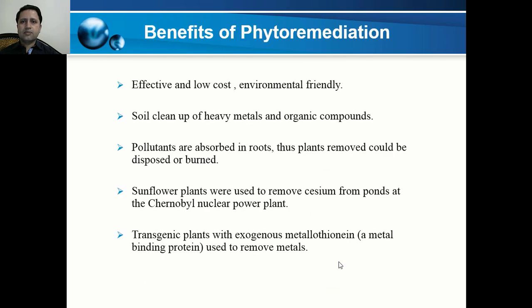Here are some benefits of phytoremediation: it is effective, low cost, and environmentally friendly. It enables soil cleanup of heavy metals and organic compounds — pollutants absorbed into the roots allow the harvested plants to be disposed of or burned. For example, sunflower plants were used to remove cesium compounds at the Chernobyl nuclear power plant. Transgenic plants with exogenous metallothionein and metal-binding proteins can also be used to remove metals.